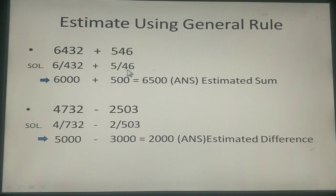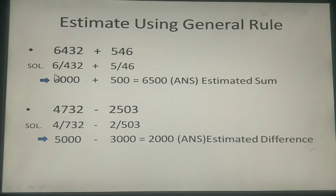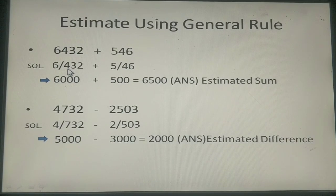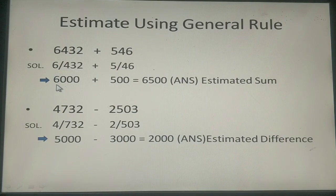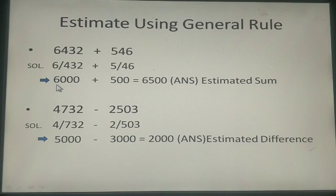And here after the slash 46 is definitely going to become 0. So now what you have to think is that this number 4. This digit is definitely smaller than 5. So we are not going to add 1 to this number 6. We will keep it as it is 6. And the rounded off number that you have got is 6000.